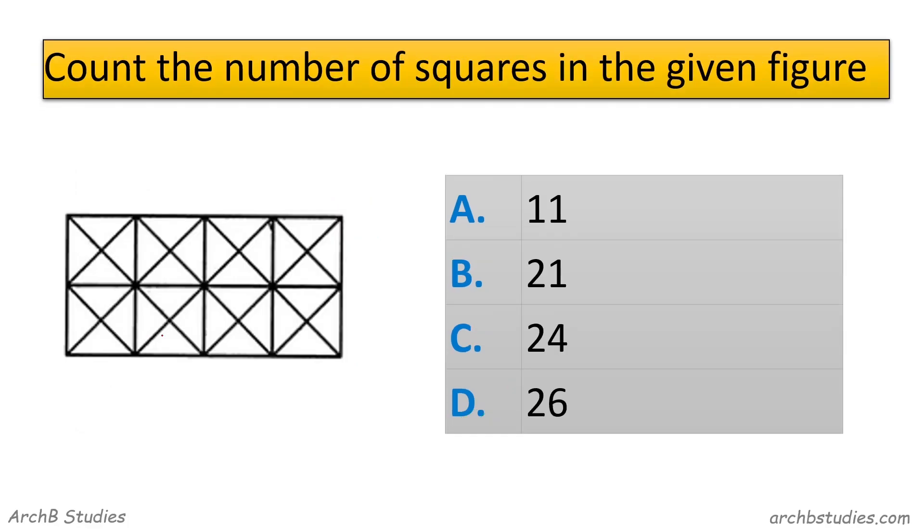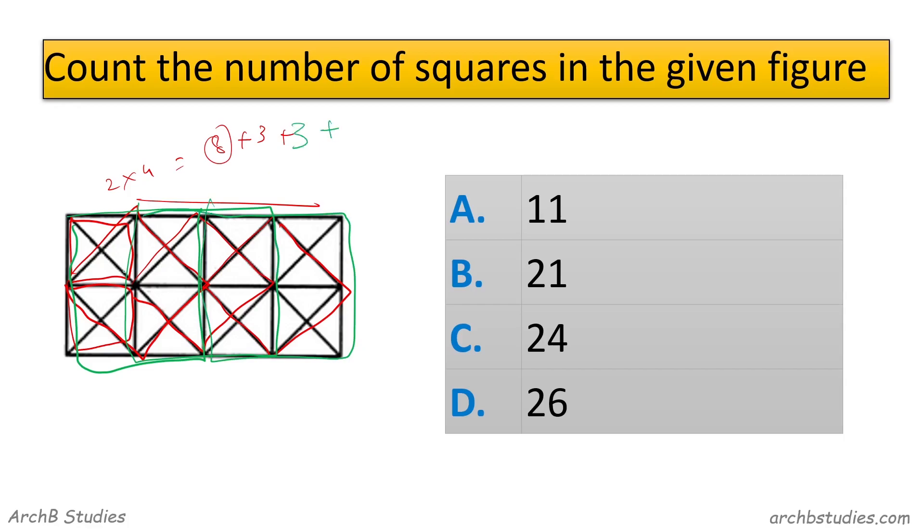So next question we have count the number of squares in the given figure. So you can see 1, 2. So 2 and 2. So here 4 is 8. 1, 2, and 3. 1, 2, 3. 1, 2, 3. And if you see these smaller ones, 4 in this one, 4 in this one, 8 plus 2 here. So we got 8 plus 6 plus 10, 24. So correct answer is 24.